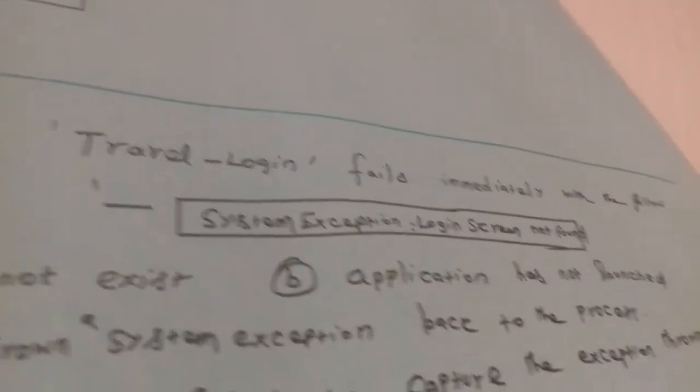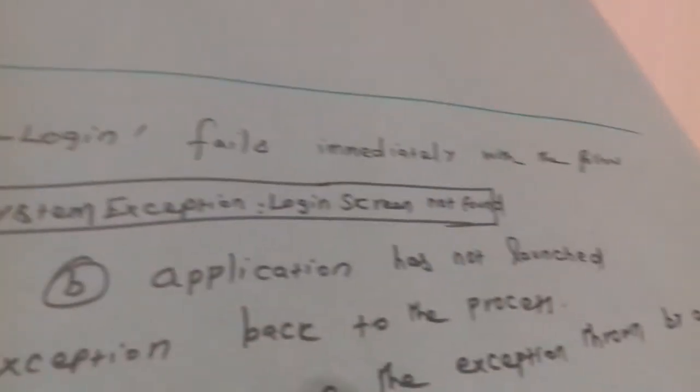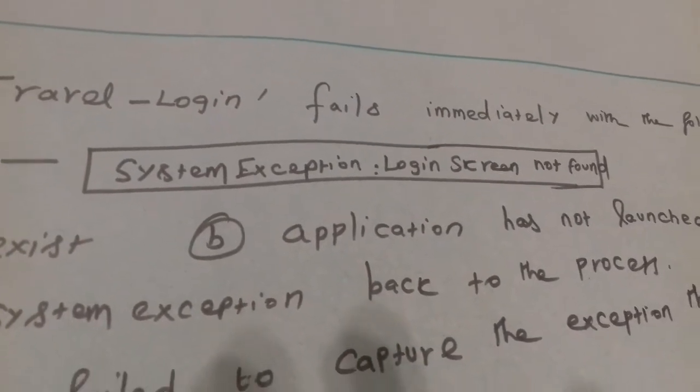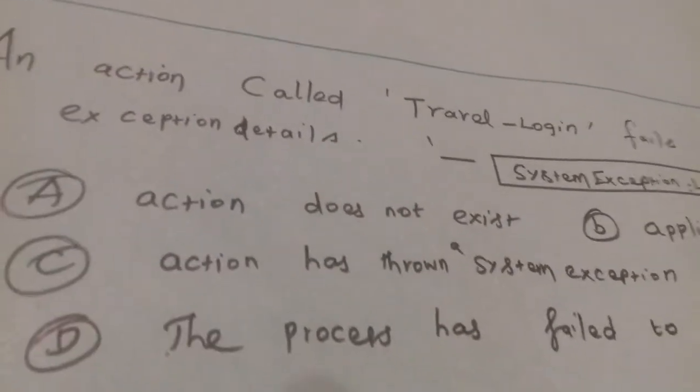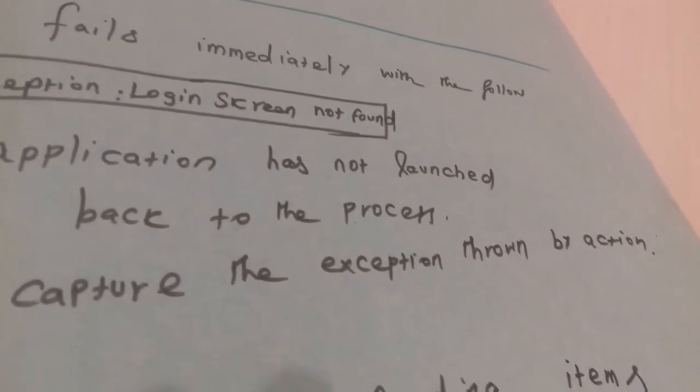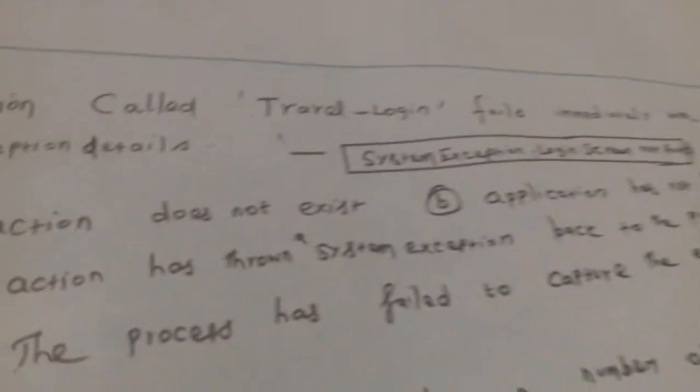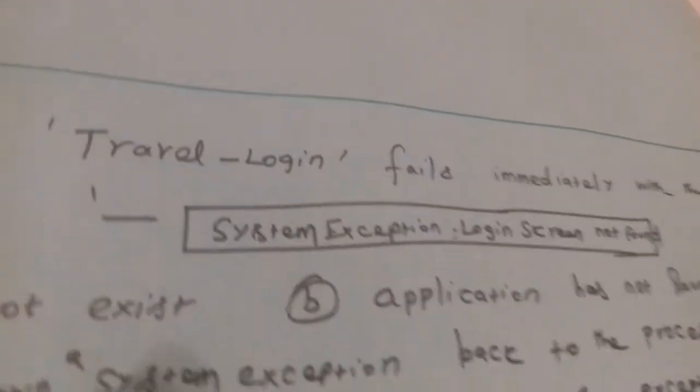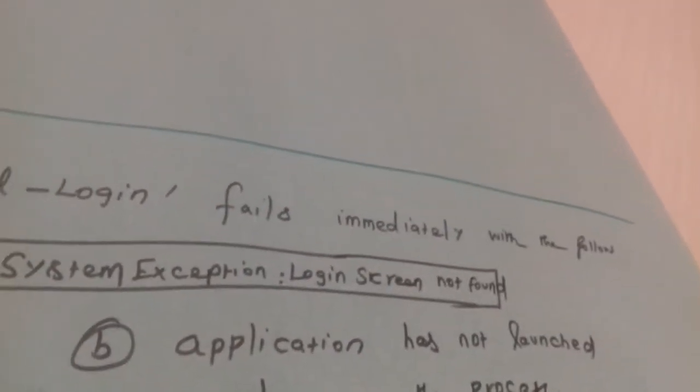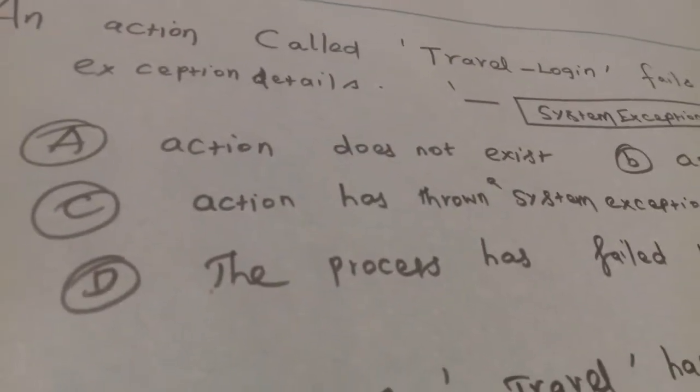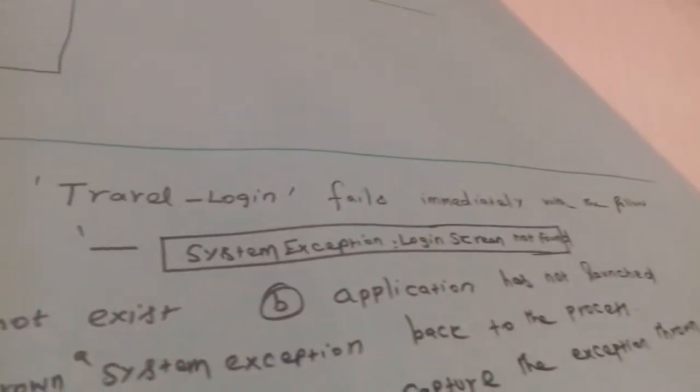Option C is action has thrown system exception back to the process. Option D is the process has failed to capture the exception thrown by action. The correct answer is B, which is application has not launched.